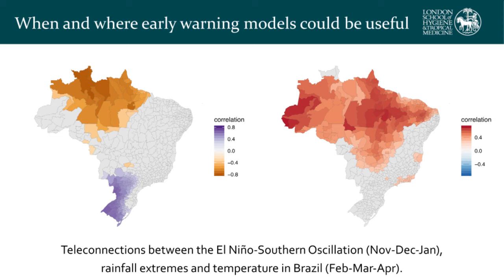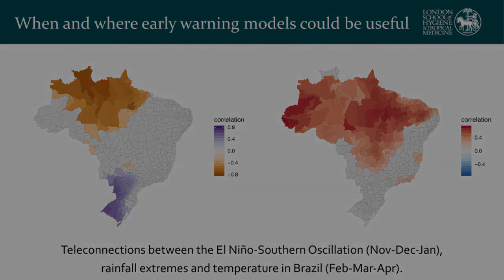Here we can see the relationship between the El Niño Southern Oscillation and the Palmer Drought Severity Index. El Niño events are strongly related to drought events in the north of Brazil and at the same time strongly linked to flooding events in the south. So we can use these precursory climate phenomena to help us predict in advance what kind of different dengue patterns we might see depending on where we are.